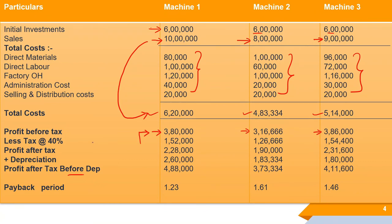To calculate payback period, we need profit after tax but before depreciation — always remember this. After getting profit after tax, we add back depreciation. Using the depreciation values calculated earlier, we get net profit after tax before depreciation as 4,88,000 for Machine 1.